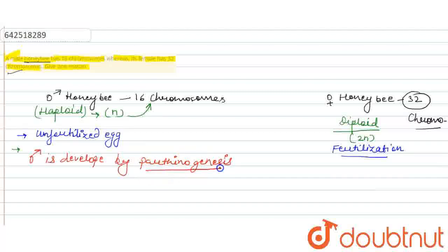The male honeybee is developed by parthenogenesis. Okay, that means, no fertilization will be there.